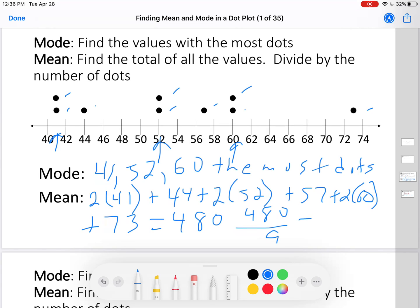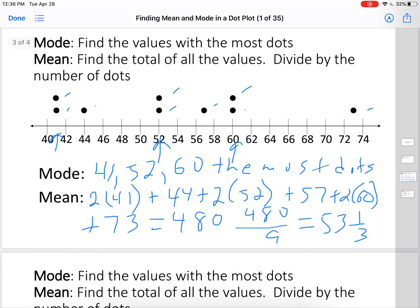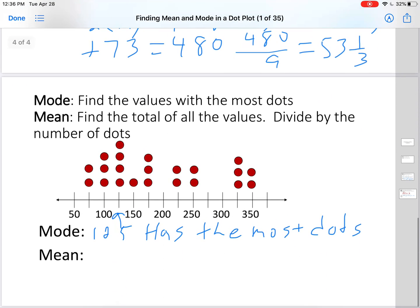So we'll do 480 divided by nine equals 53 and one third. And that's how you show your work in finding mean. That's what I'm looking to see from you. Okay, let's do another example. Let's find the mean of this set.